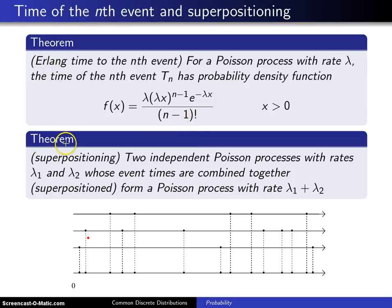Here's a second theorem, and this is something that is known as superpositioning. Let's say you have two independent Poisson processes with rates lambda 1 and lambda 2, whose event times are combined together, that is superposition, to form a Poisson process with rate lambda 1 plus lambda 2.